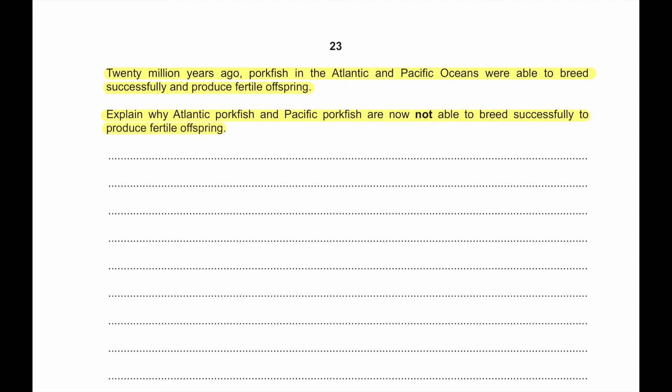The Panama land formation separated the population of porkfish due to geographical isolation. There was no gene flow between both populations because they couldn't travel across the land. Random mutation occurred naturally within the population. Due to different environmental conditions, different alleles were selected for within the separated populations. Over time, the populations accumulated different morphological and behavioral features, and eventually reproductive isolation occurred. This is an example of allopatric speciation brought about by geographical isolation.